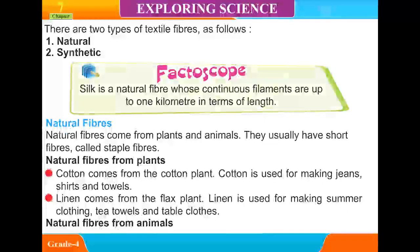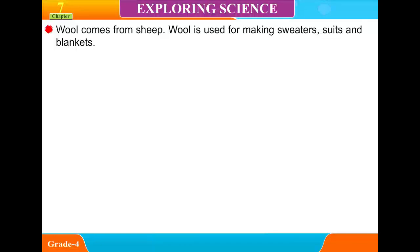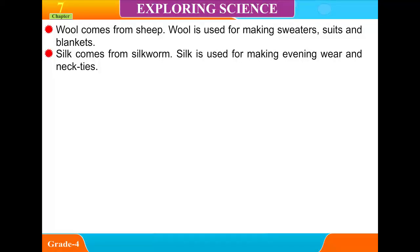Natural fibers from animals include wool, which comes from sheep and is used for making sweaters, suits, and blankets. Silk comes from the silkworm and is used for making evening wear and neckties.